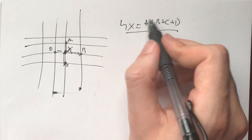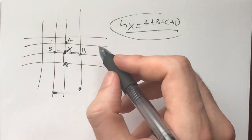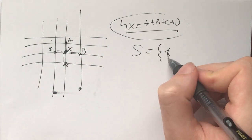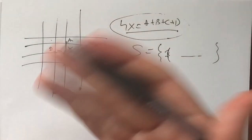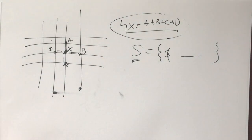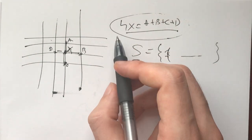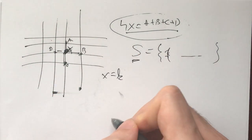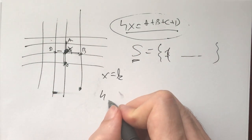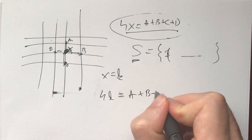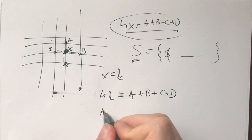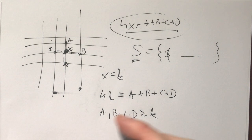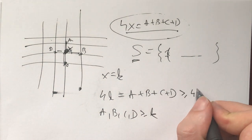For any set of natural numbers — like the set of all the labels — this is a subset of the natural numbers. It can be finite or infinite, but it has a smallest element. Let the value of that element be K, and pick X such that X equals K. Now we have 4K equals A plus B plus C plus D. And we know that A, B, C, and D are all greater than or equal to K, so this sum is greater than or equal to 4K.